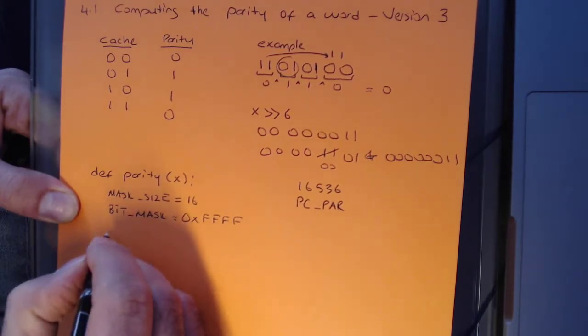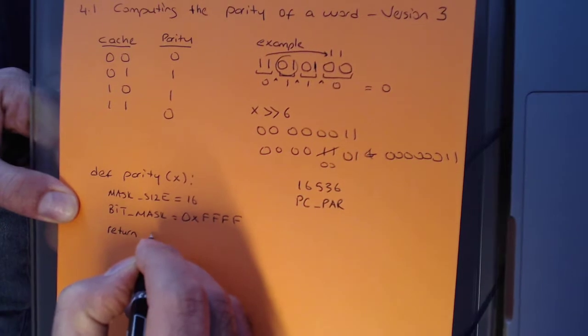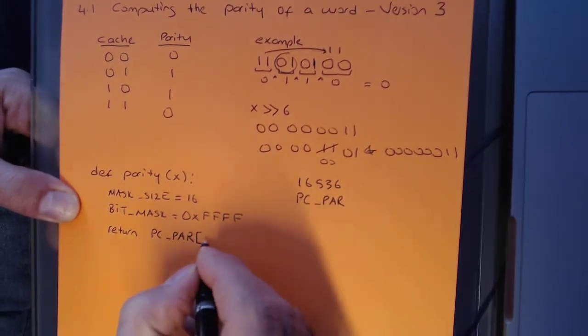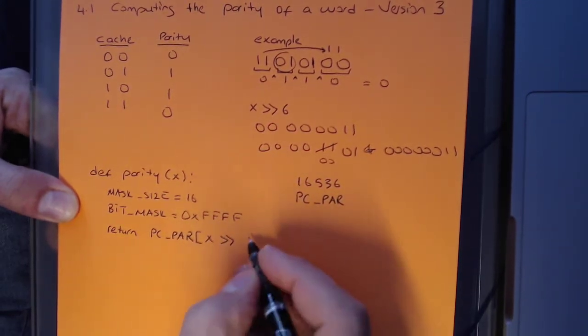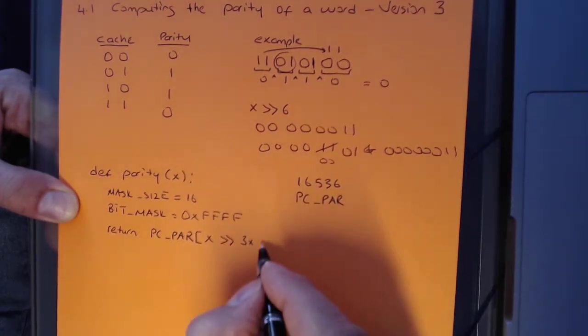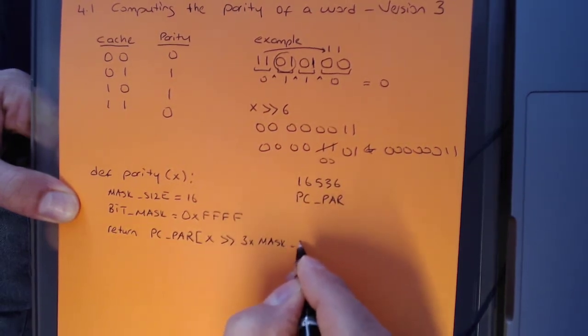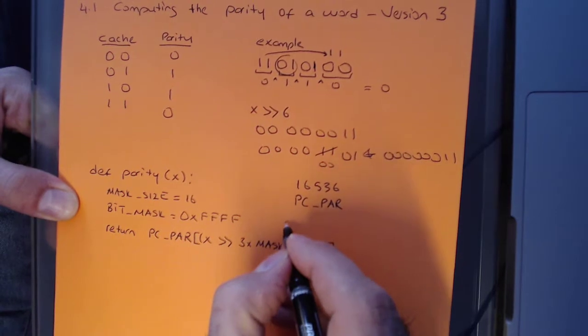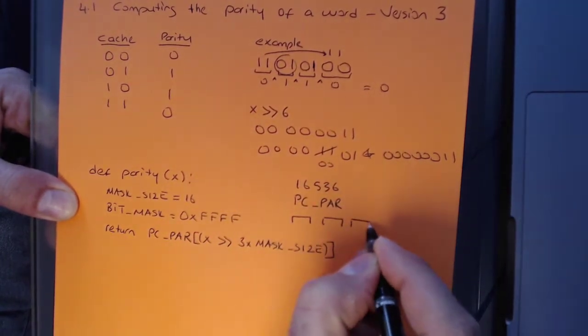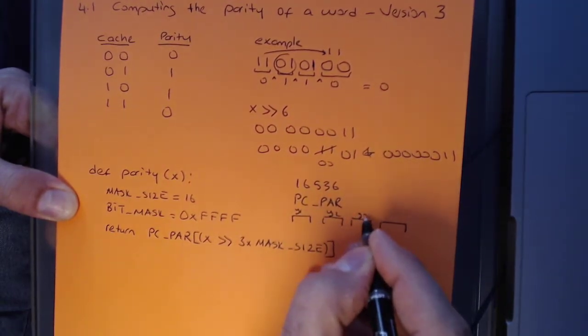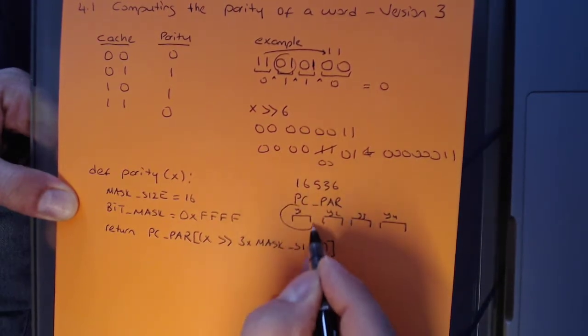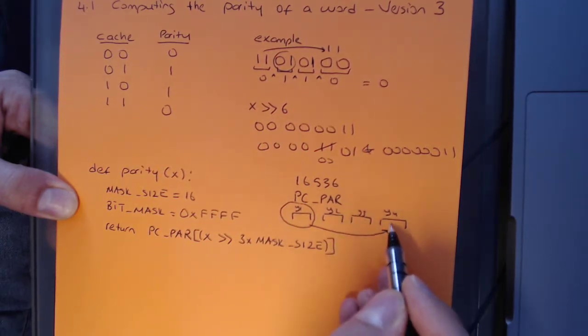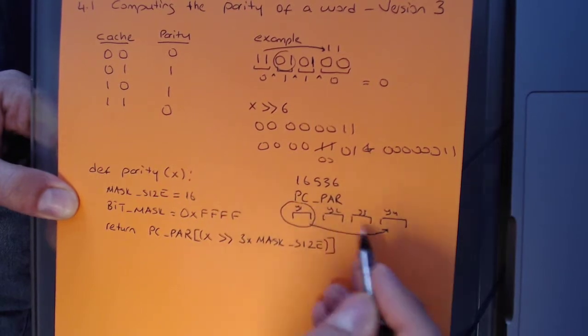So what I would do then is return pre-computed parity cache lookup. In my cache, I'm going to take my number X, and right shift by 3 times my mask size. Let's assume we have four 16 bits: y1, y2, y3, and y4. What I'm trying to do is take the 16 most significant bits and move it to be the least significant 16 bits. In order for me to do that, I have 16, 32, and 48 bits. I need to shift by 48 to get that number.